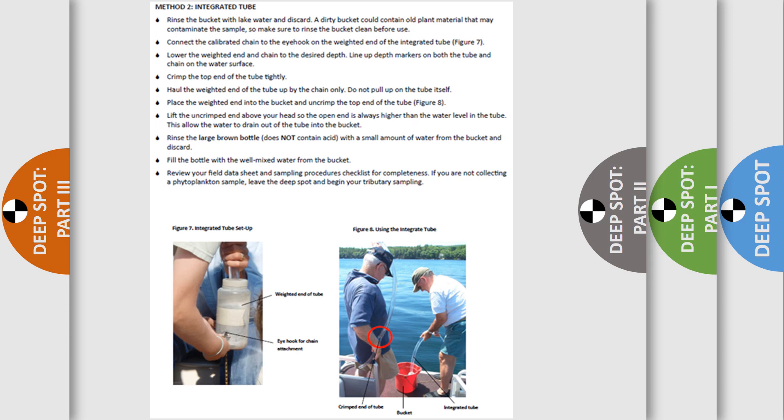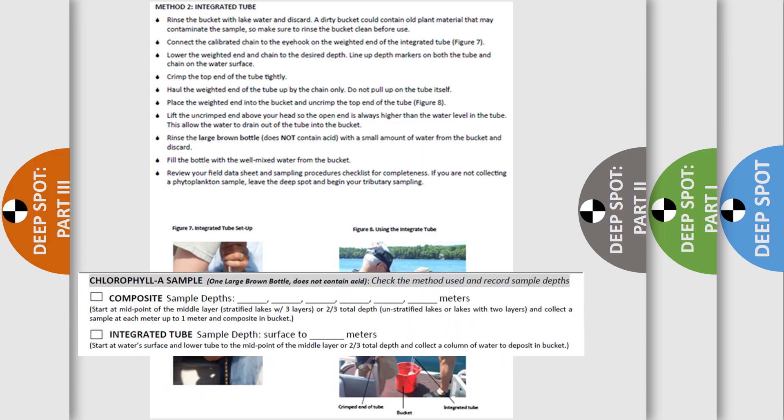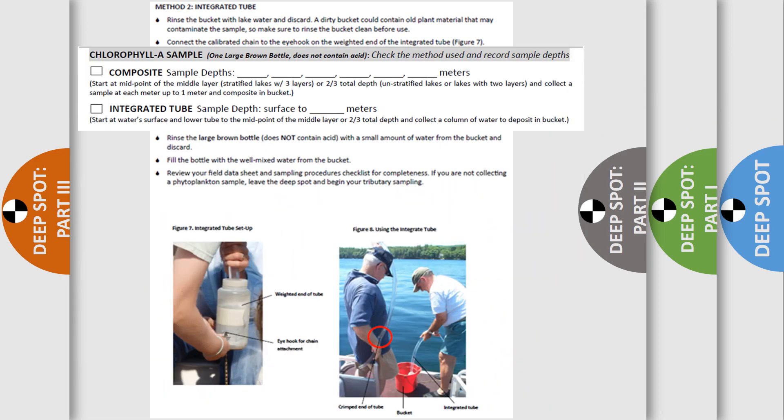The second method is the integrated tube method. Note, if you're using this method, you're done with the Kemmerer bottle. Unclip the chain and messenger and put the bottle away. The integrated tube method collects a column of water from the surface to a desired depth at the same time, similar to a big straw. Remember to mark the method and sample depth on your field data sheet.